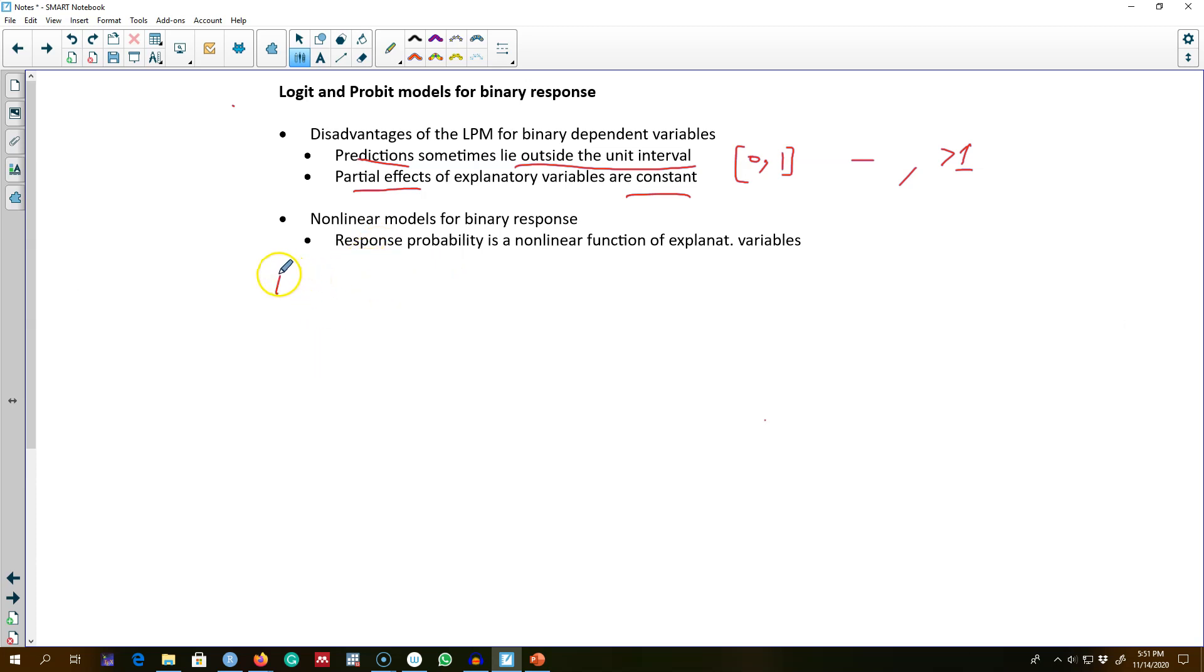Essentially, what we are interested in knowing in a binary variable is the probability that Y will be equal to 1. That is the probability of success given all the X variables. We can represent this type of relationship as g(beta_0 + beta_1...+ beta_k). There are various forms of this g that have been suggested to estimate this non-linear model.